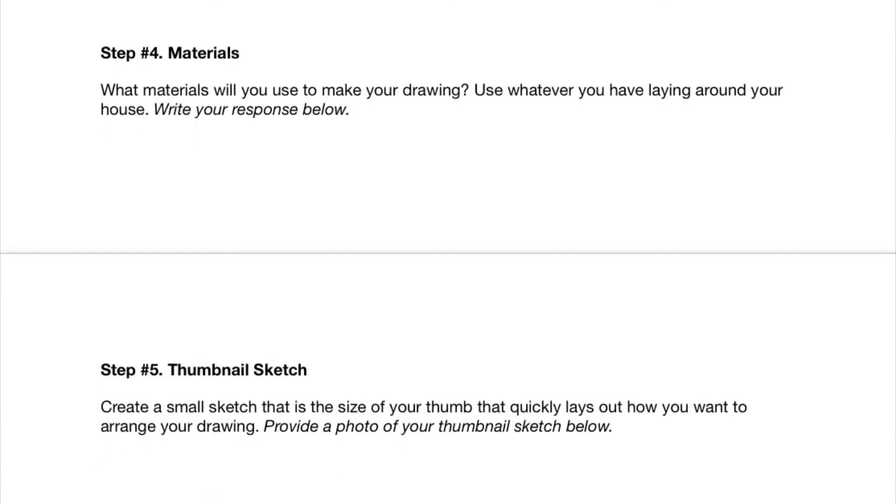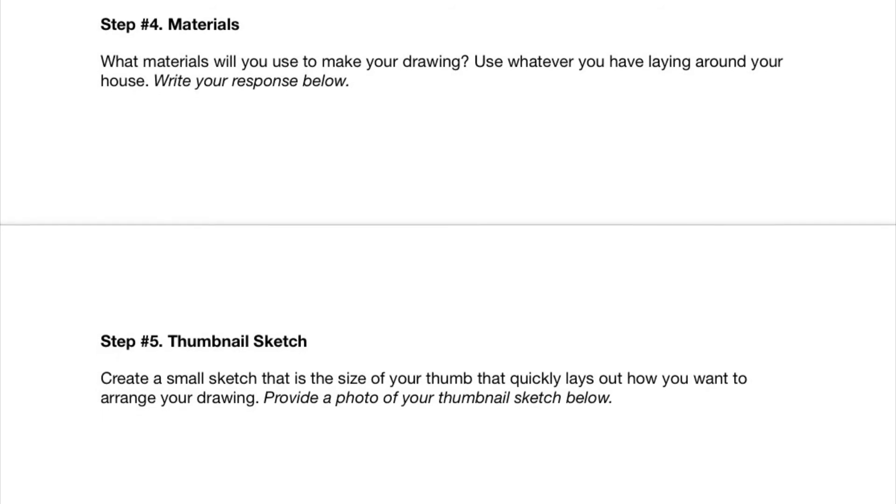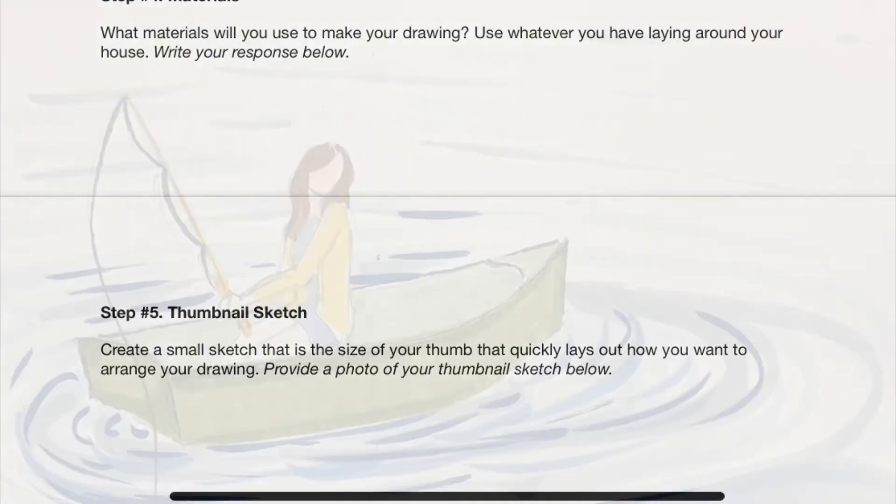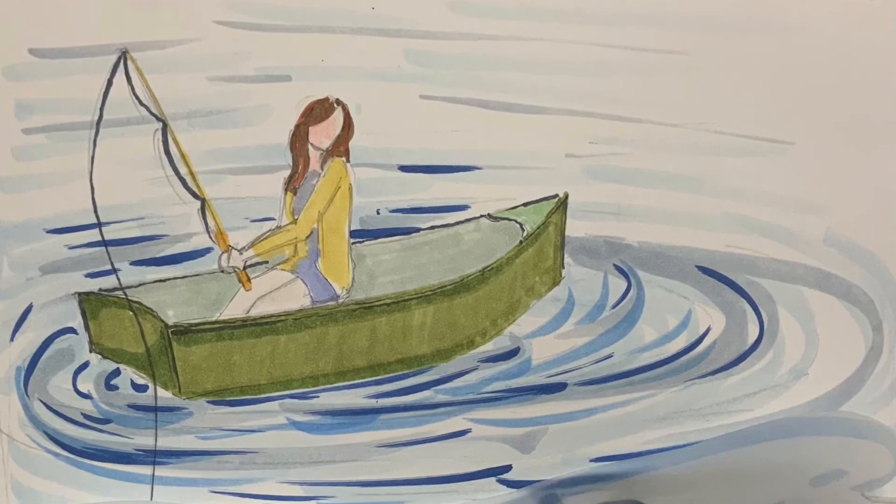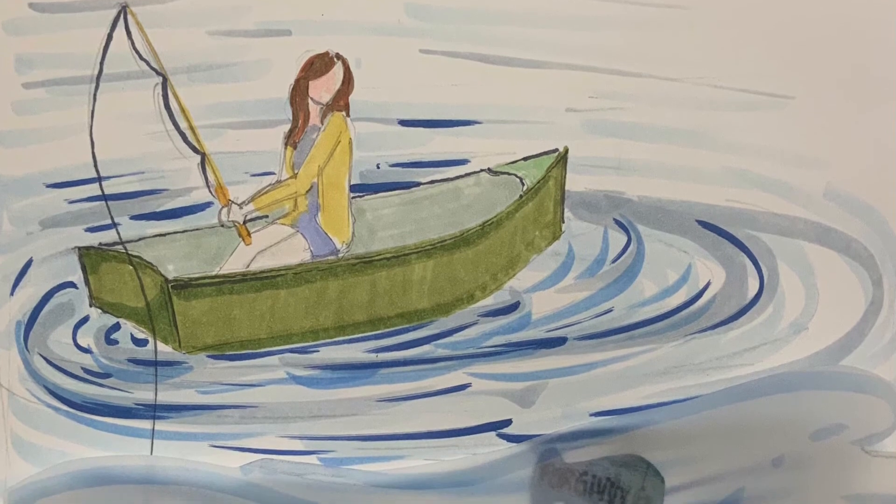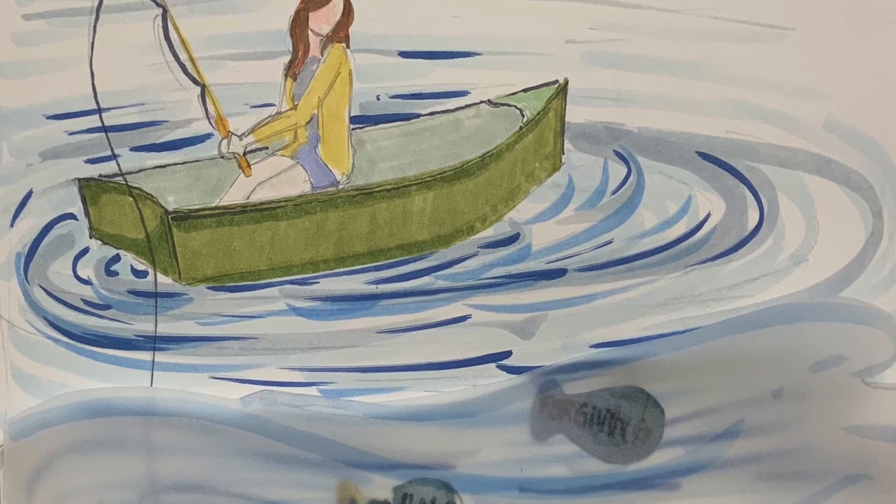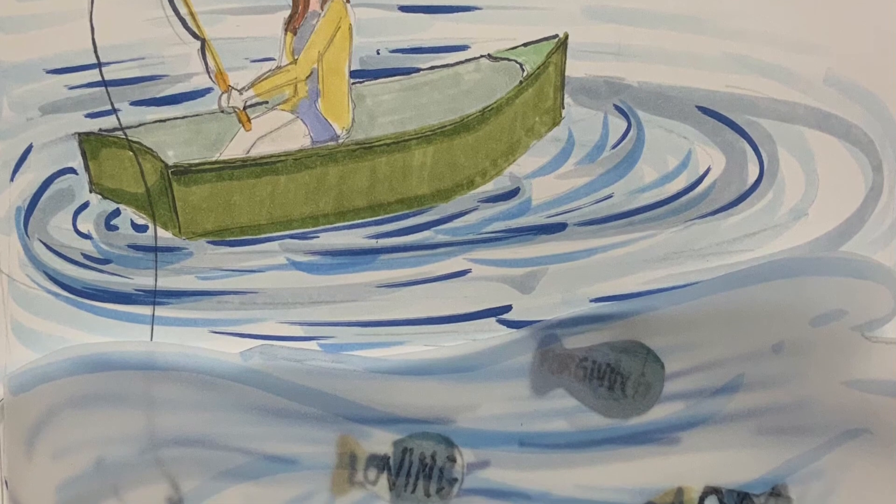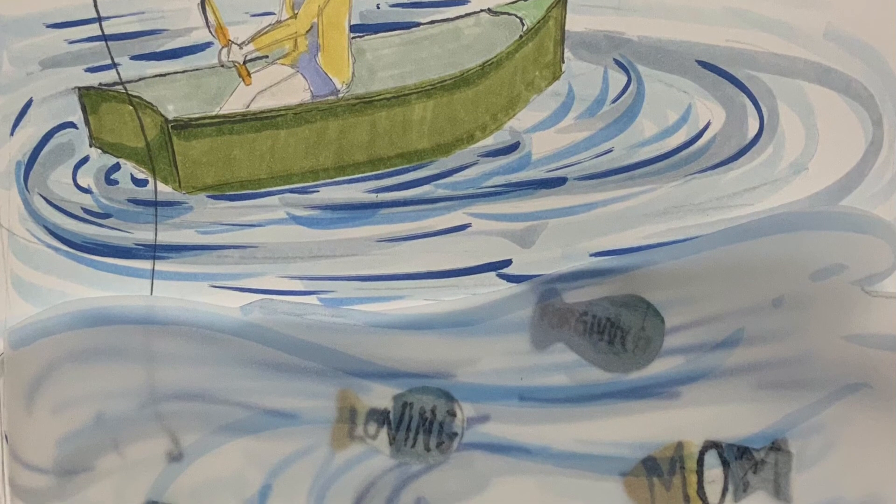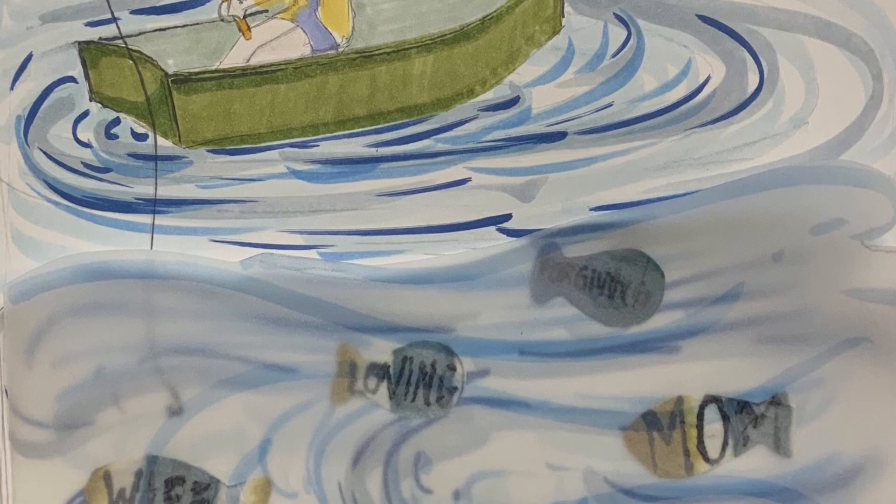Once you've completed filling out steps one through five, you can submit this into Schoology in the assignment for today. If you want, you can begin making your sketch or you can save it for tomorrow's class period. You should spend about 45 minutes to an hour actually sketching this out. And then when you're done, take a picture of it and submit it into tomorrow's assignment.